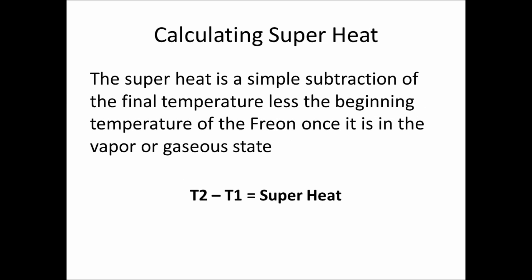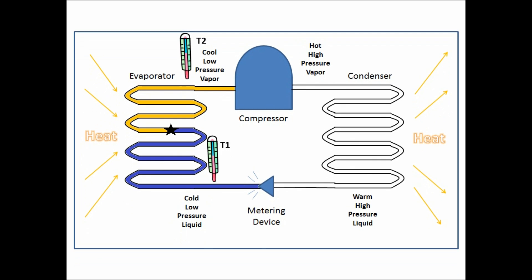So, calculating superheat. Superheat is just a simple subtraction: the final temperature less the beginning temperature, or T1 minus T2. This is your superheat across the evaporator coil. T1 is the liquid temperature of the freon entering the evaporator coil, and T2 is the gas temperature leaving the evaporator coil.